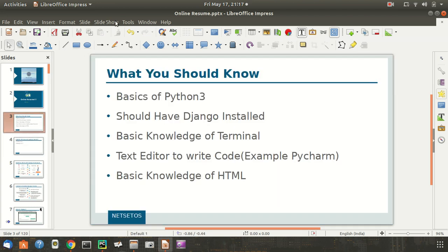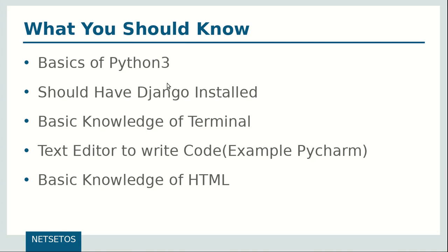I would like to take a moment to cover what you should know before starting this course. First, you should have the basics of Python 3 — we will be using 3.7, but any Python 3 will work. Next, you should have Django installed on your computer. If you need any help with that, you can go to djangoproject.com. There are some great installation guides there, and we have also mentioned it in our last series, so you can refer to that as well.